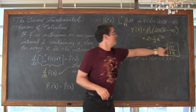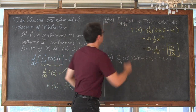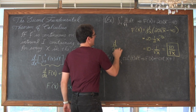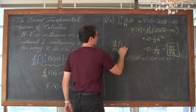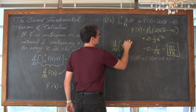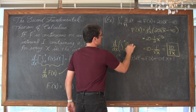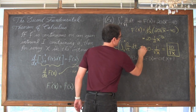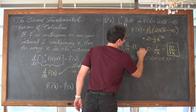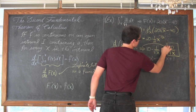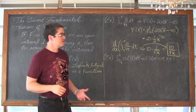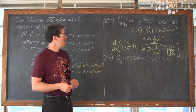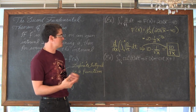So the derivative with respect to x of the definite integral from 4 to x of 10 over the square root of t dt is equal to 10 over the square root of x. It is the same function — just with t taken out and x put in its place.